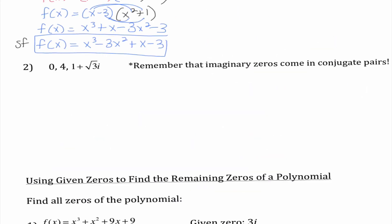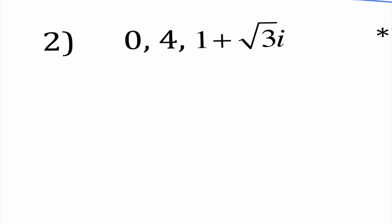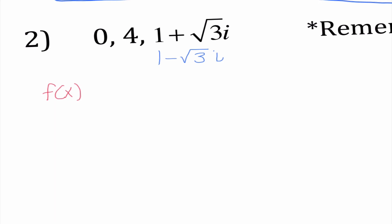On number two, we have a nice reminder that imaginary zeros always come in conjugate pairs. Sometimes it'll give us something like a zero of 1 plus radical 3i. I know if 1 plus radical 3i is an answer, then 1 minus radical 3i also has to be a zero. If I forget that, I'm not going to get the right answer, and I'm going to have i's and radicals and all sorts of stuff in my equation.